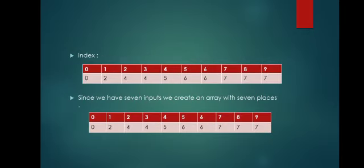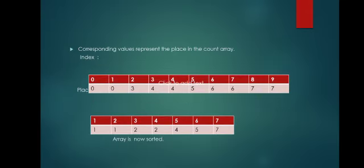Index. Since we have 7 inputs, we create an array with 7 places. Now, corresponding values represent the place in the count array index as shown below. Now, array is sorted.